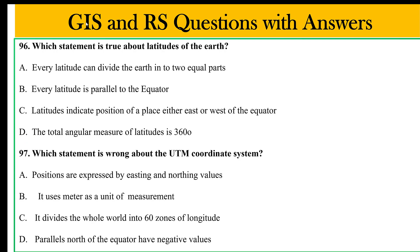Which statement is true about latitude? Every latitude can divide into two equal parts. Every latitude is parallel to the equator. Latitude indicates the position of a place either east or west of the equator. The total angular measure of latitude — every latitude is parallel to the equator.